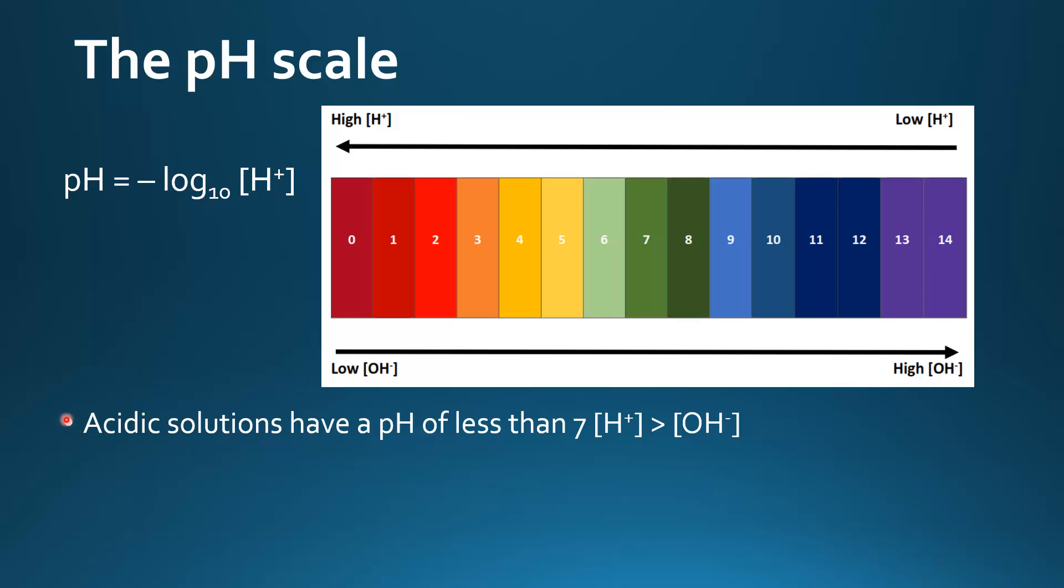Acidic solutions have a pH of less than 7. That means the concentration of hydrogen ions is greater than the concentration of hydroxide ions.